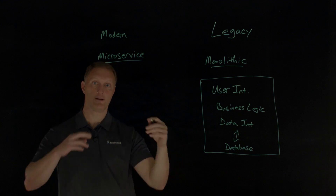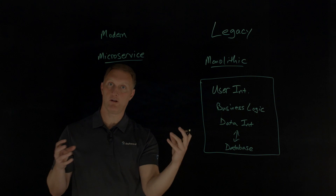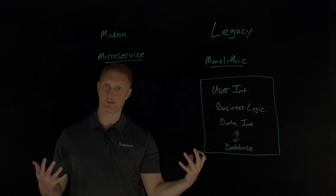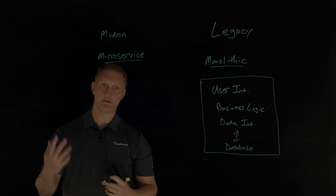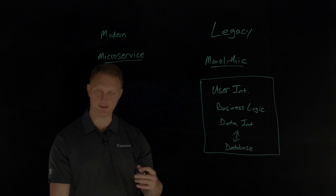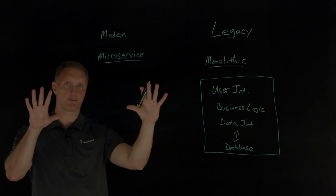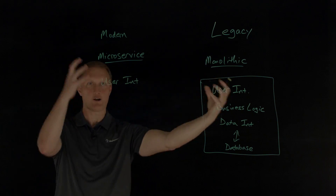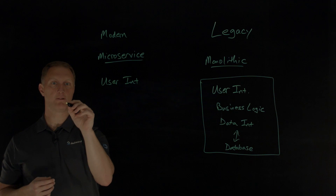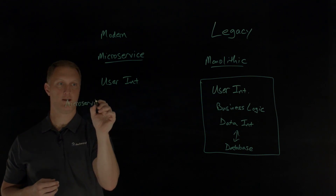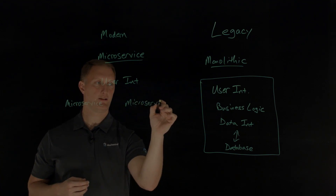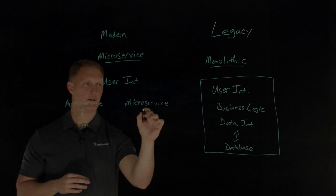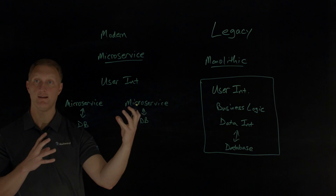In a microservices architecture, things are broken down into a collection of smaller, independent units. These units carry out every application process as a separate service. All the services have their own logic and databases, and they perform their specific functions. If I were to draw out a basic picture of the microservices architecture, you would still have a user interface, because users still interact with the application. But then you'd have a series of microservices — you may have hundreds of them — and these all interact with their own databases, as more independent units.